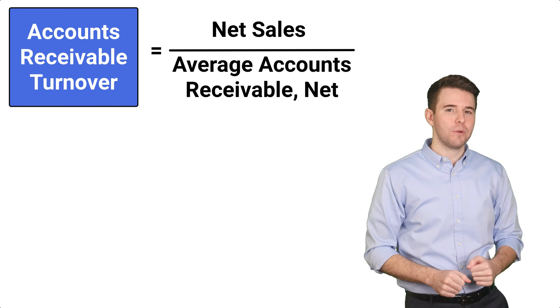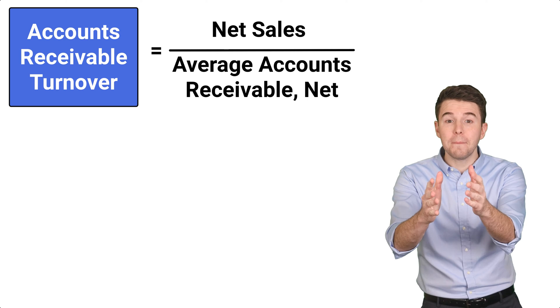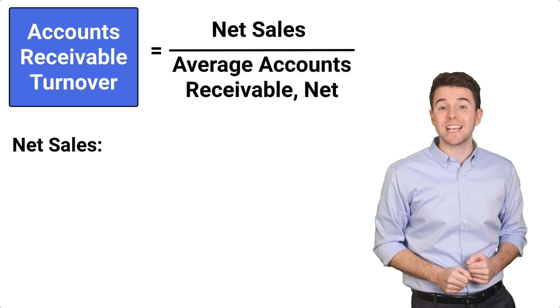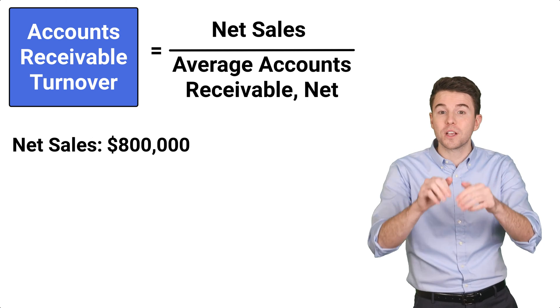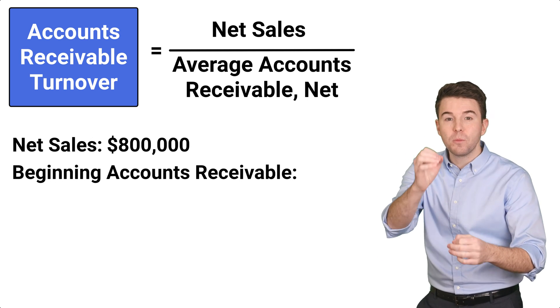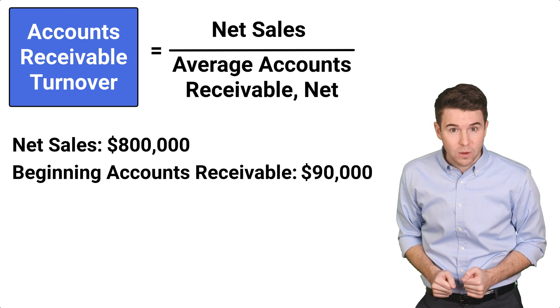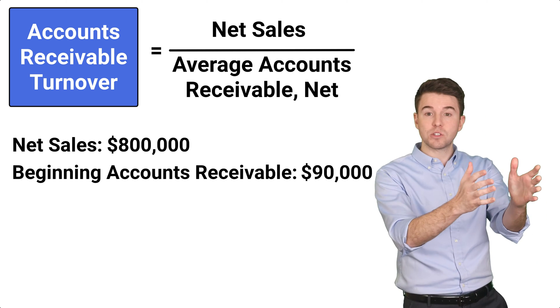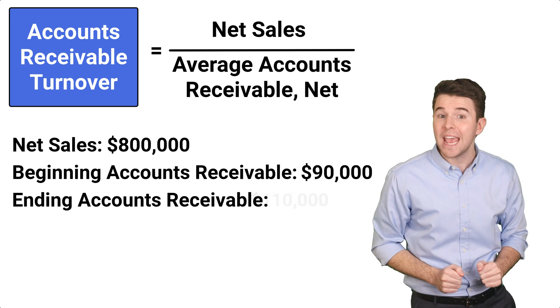Let's break it down with an example. Assume a company has net sales of $800,000 for the current year. Accounts receivable at the beginning of the year was $90,000 and accounts receivable at the end of the year is $110,000.